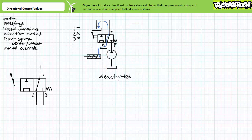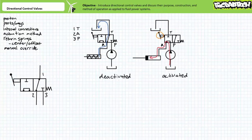Two-position, three-way directional control valves are commonly used to control the actuation direction of single-acting cylinders. Consider a configuration making use of port one as the tank port, port two as the actuator port for a spring-retracted, hydraulically extended single-acting cylinder, and port three as the pressure port. The spring-offset deactivated position blocks the pressure port while the actuator port is drained to tank, allowing the spring force to retract the rod. When the valve is actuated into the second position, pressurized flow is routed to the single-acting cylinder and the cylinder extends. When an operator releases the manual lever, the return spring offsets the valve so the spring force retracts the cylinder.